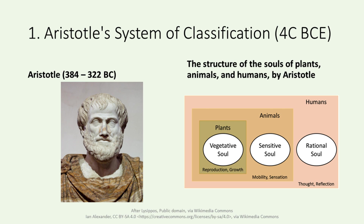Aristotle posited that living beings possessed distinct types of souls. He believed that plants possessed only a vegetative soul, responsible for growth and reproduction. Animals, on the other hand, had both a sensitive soul, which governed their ability to move and sense their surroundings, and a vegetative soul. Humans were considered unique, as they were believed to possess all three souls — vegetative, sensitive, and rational — enabling them to think and reflect. Aristotle observed and classified more than 500 species of animals and dissected many of them. Based on this work, he wrote several books on the ecology and embryonic development of animals and advocated for the theory of spontaneous generation, which suggests that living things can arise accidentally from non-living substances such as soil or rotten wood.